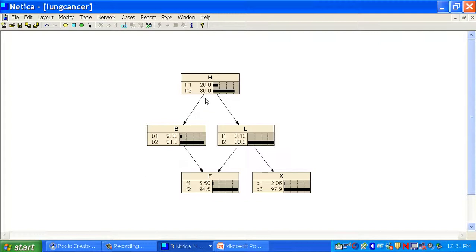This means not smoking, H2. This is bronchitis given smoking. Again, NETICA does not show the conditional distributions.